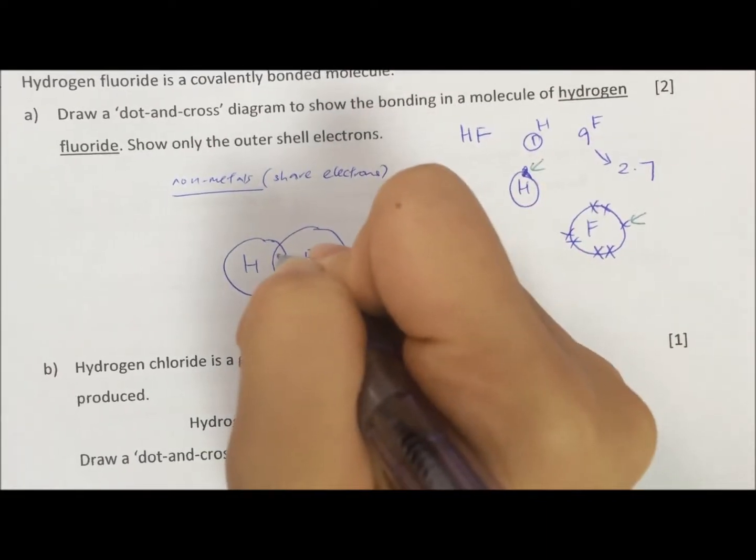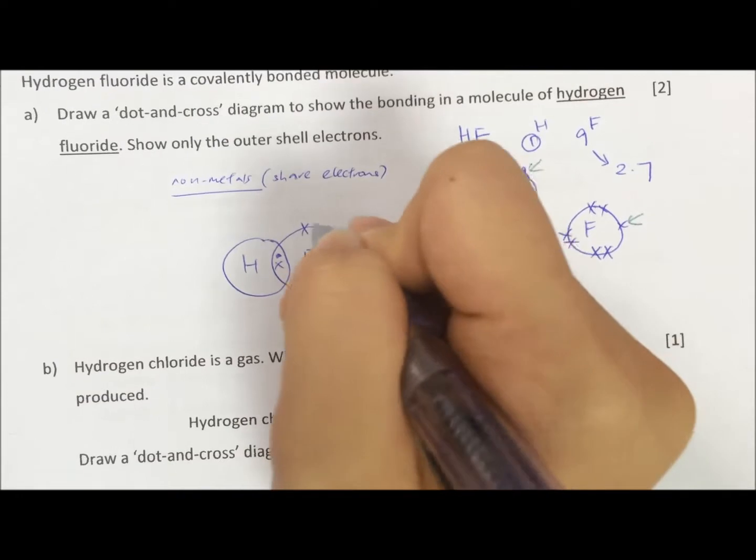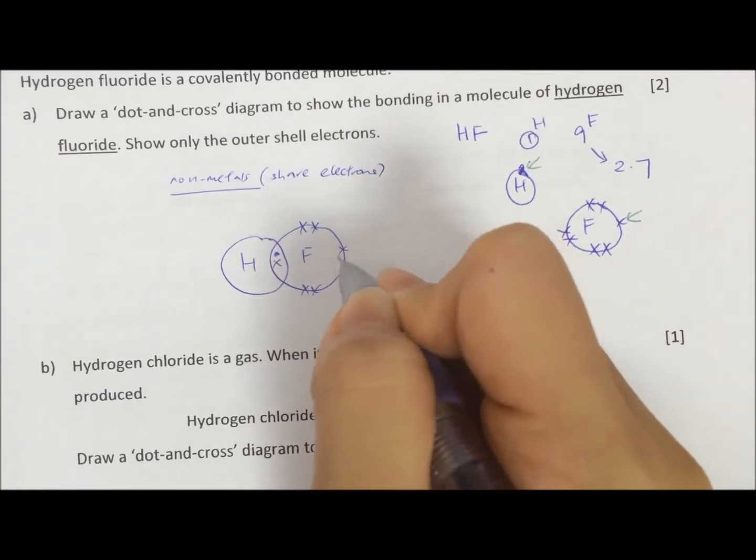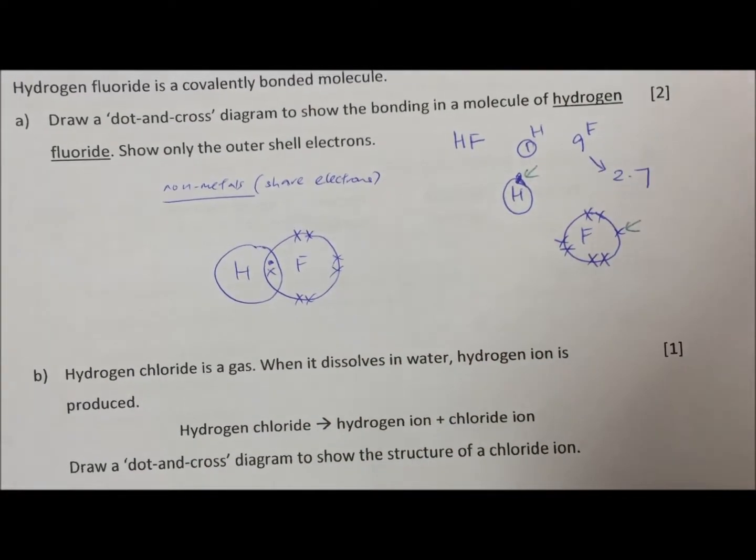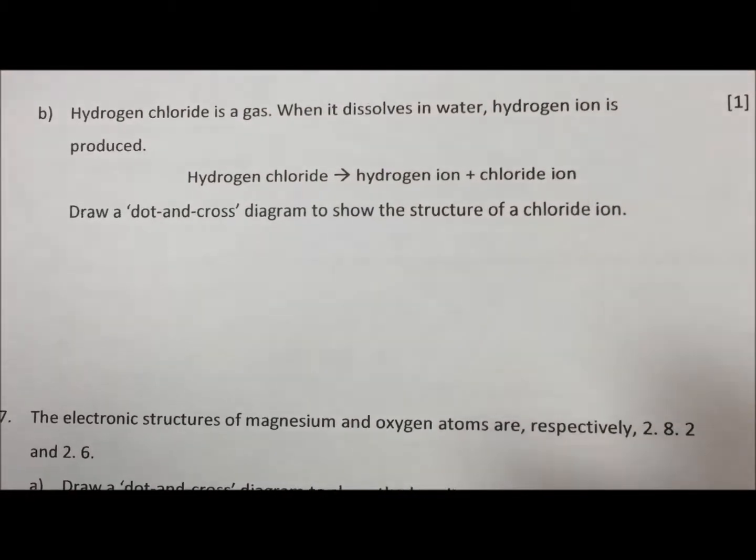Which means they must overlap. So hydrogen, we draw the lonely dot. Fluorine, we draw the lonely cross. Then we draw in the pairs of crosses at the side. So you can see that the valence shell is completely filled.